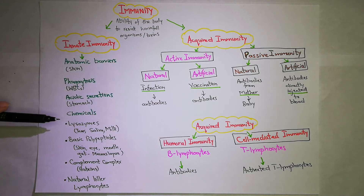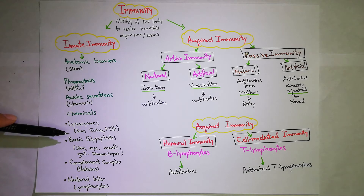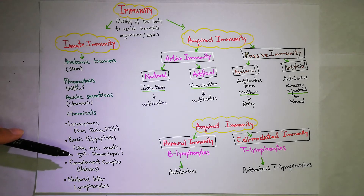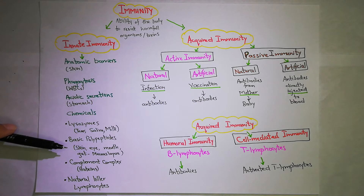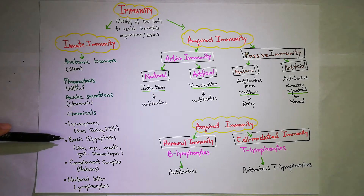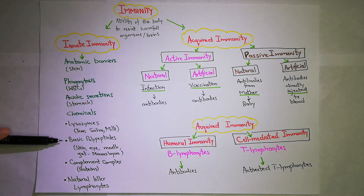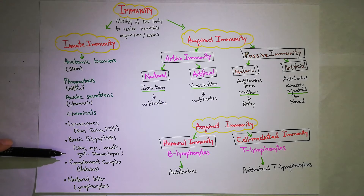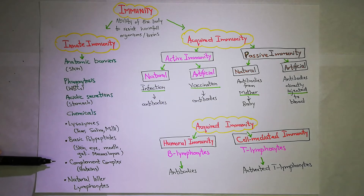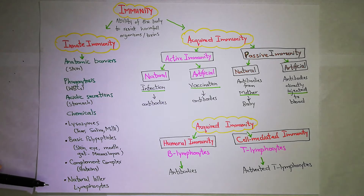These chemicals are available in body secretions such as tears, saliva, and milk, or at entry points where organisms can enter the body such as skin, mouth, and eyes. Lysozymes are found in tears, saliva, and milk — they are naturally produced. Basic polypeptides are found at entry points: skin, eye, mouth, and gut mucus layer. Complement complex — which we will study in detail — are proteins that serve as defense mechanisms. Natural killer lymphocytes are also part of innate immunity.